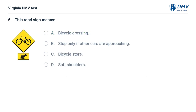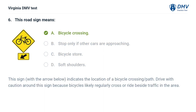This road sign means: A. Bicycle crossing, B. Stop only if other cars are approaching, C. Bicycle store, D. Soft shoulders. The correct answer is A: Bicycle crossing. This sign, with the arrow below, indicates the location of a bicycle crossing path. Drive with caution around this sign because bicycles likely regularly cross or ride beside traffic in the area.